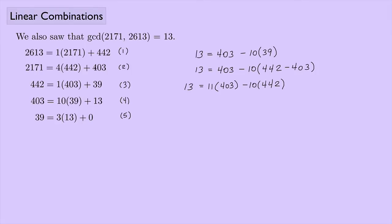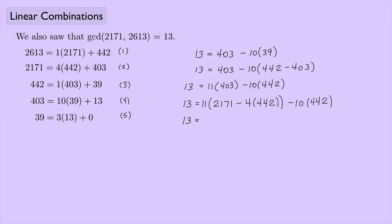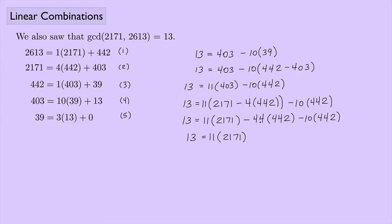Now from equation 2, I can replace 403. That gives 403 equals 2171 minus 4 times 442. Substituting: 13 equals 11 times (2171 minus 4 times 442) minus 10 times 442. Distributing, I get 11 times 2171, then 11 times 4 is 44 times 442 minus 10 times 442. Combining the 442 terms: 44 plus 10 gives 54. So I have 13 equals 11 times 2171 minus 54 times 442.